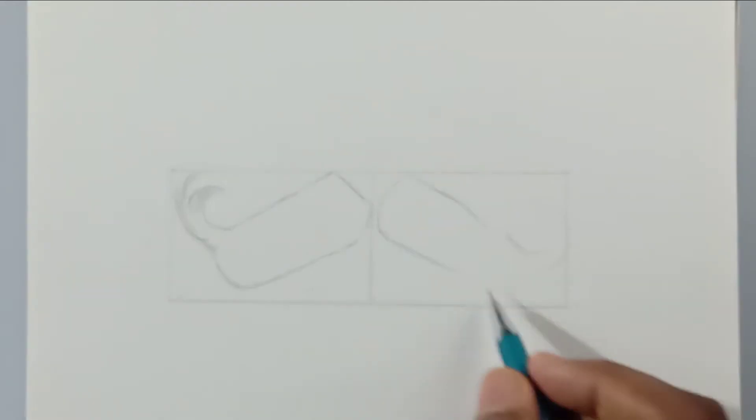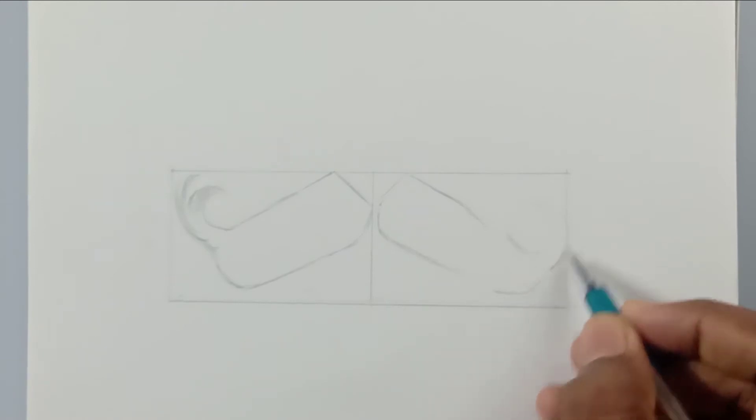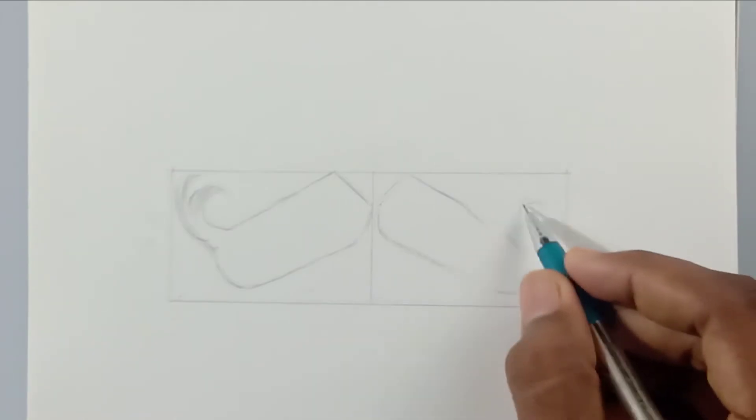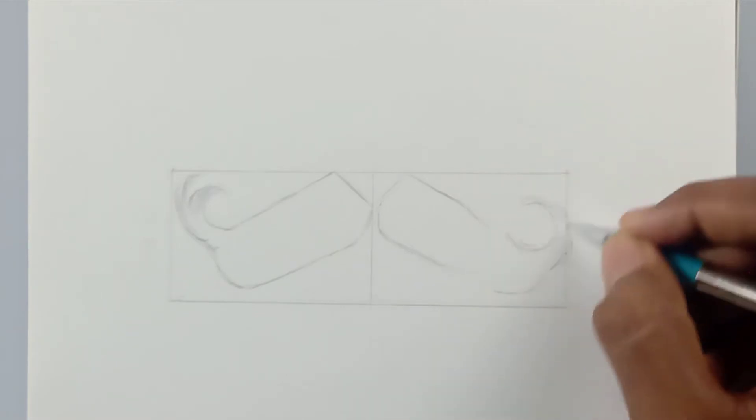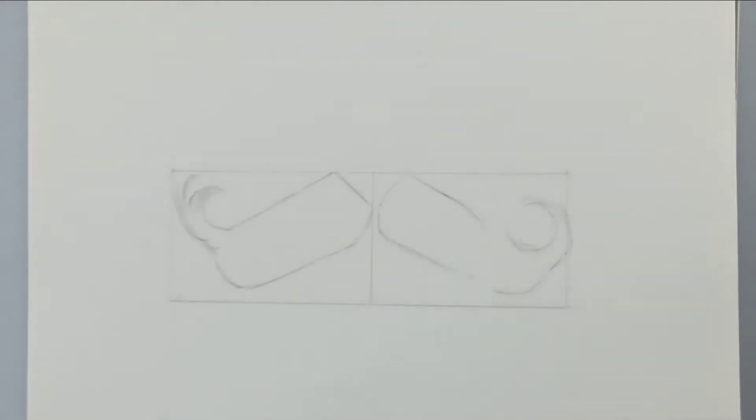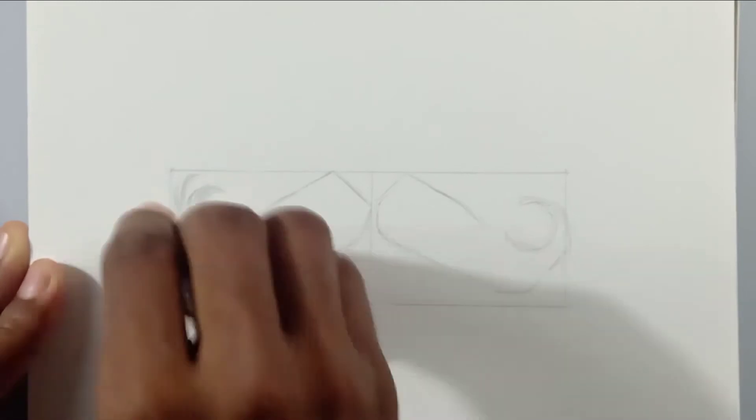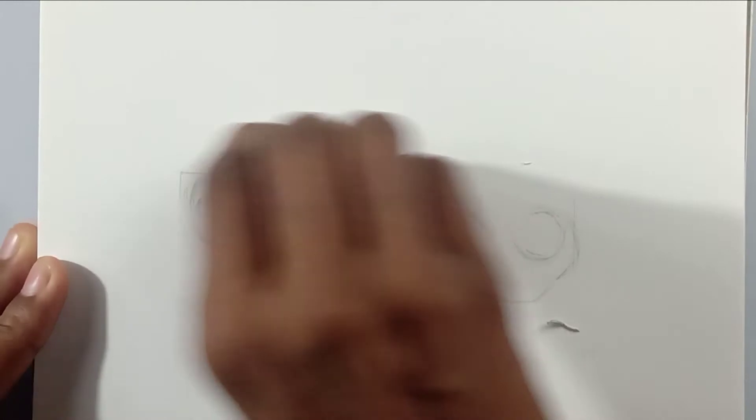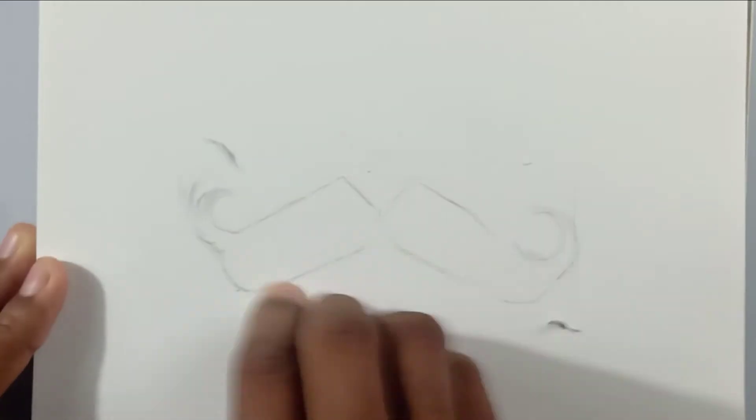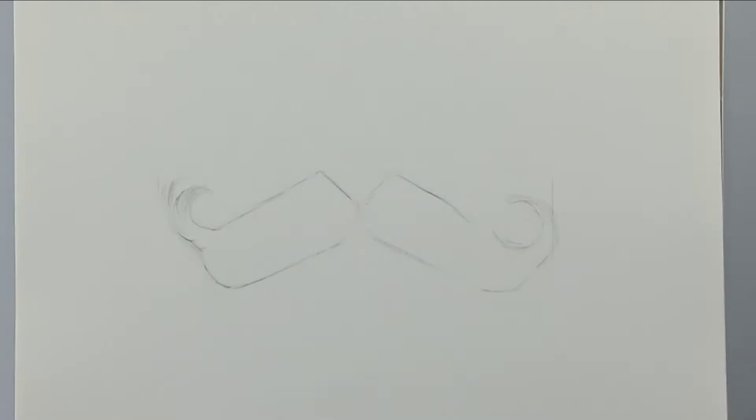Here you can see how I'm drawing the outlines. Believe me, this is so easy. Just grab a pencil and draw a rectangle and you are good to go. Now we don't need the rectangle which we had drawn for reference, so I'm erasing it. Take a kneaded eraser and lighten the outlines.